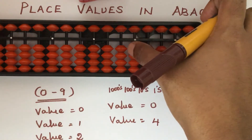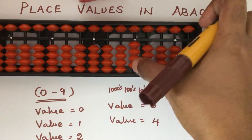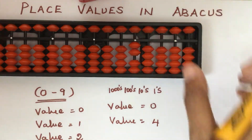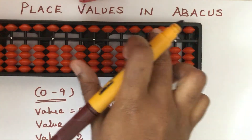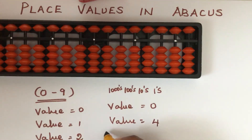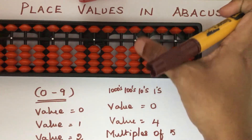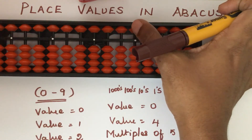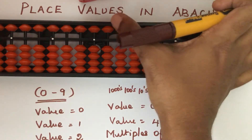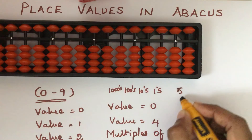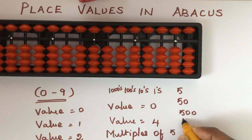In the ones place, the value of each lower bead is one. So if you need to add two, push two lower beads to the beam. The values for the upper beads are always multiples of five. In the ones place rod the upper bead is five, in tens place it is fifty, in hundreds place it is five hundred, in thousands place it is five thousand — they are always multiples of five.